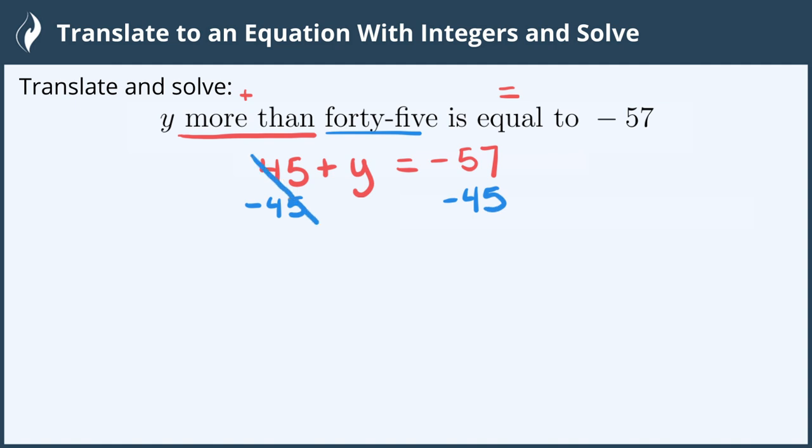45 minus 45 is 0. 0 plus y is y. Now I work on the right-hand side.